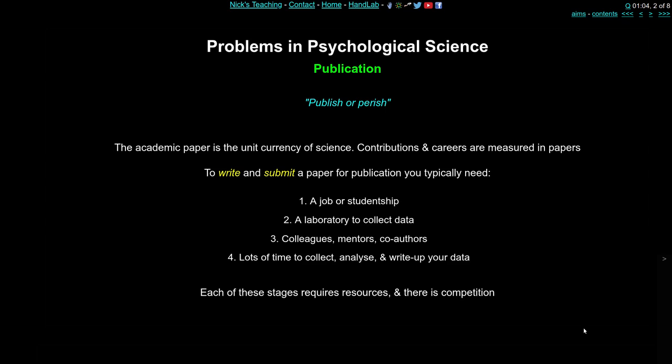To write and submit a paper, first you need to do the research — a project that could be a few months long or a five-year project. You're going to need some sort of job or studentship, some position in an academic department. It's very difficult to collect data and do science without the support of an institution. You'll need a laboratory to collect, analyse, or hold the data, as well as colleagues, mentors, supervisors, and other people to help you write the paper.